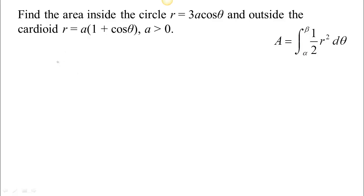Here's a more complicated example. We've got two polar curves and we want to find the area between the two. The first thing we need to do is figure out what curves we're talking about. The first curve is a circle, so let's figure out where that circle is.